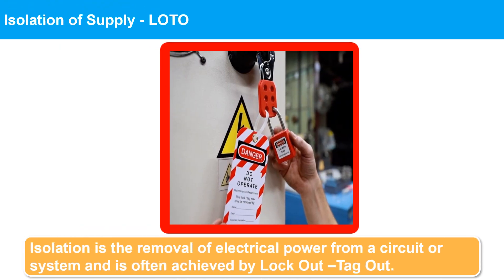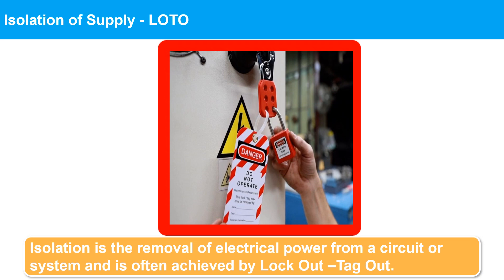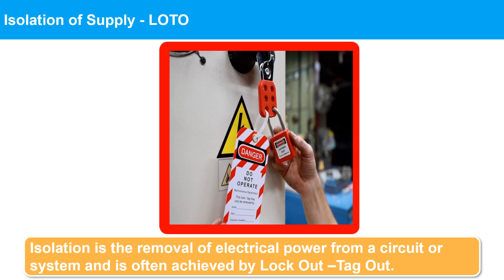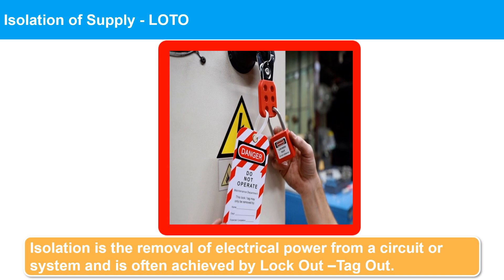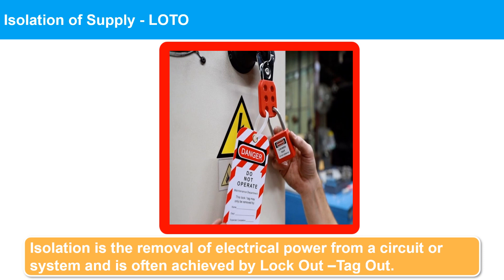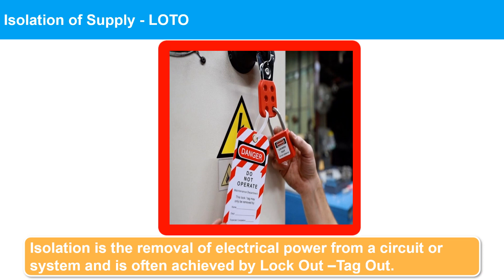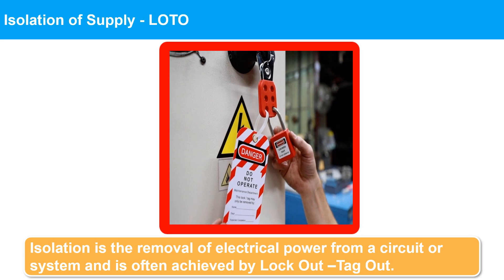Isolation of supply — lockout, tagout: Isolation is the removal of electrical power from a circuit or system, achieved using a switch, isolator, or by pulling the plug out. This makes the system or circuit dead and safe to work on. To ensure safety, isolation should always be physically secured before people work on the dead system — often achieved by padlocking isolators in the off position, using a lockout/tagout system.